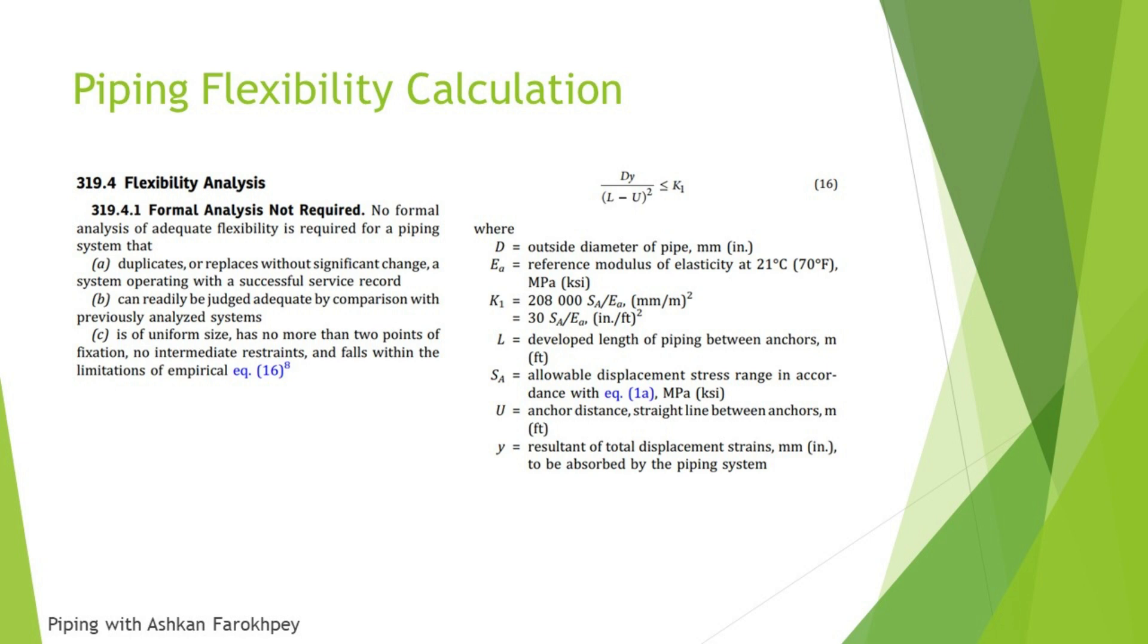In the third section, section C, it says that if your system is of uniform size and has no more than two points of fixation and no intermediate restraints exist and falls within limitations of empirical equation, you can use the formula number 16 that you can see on the right top of the page.